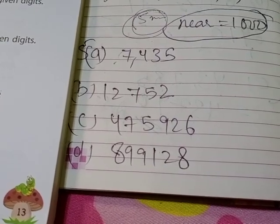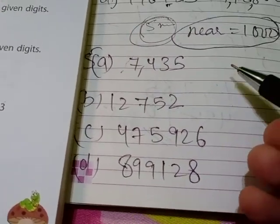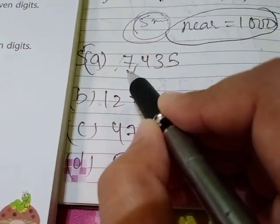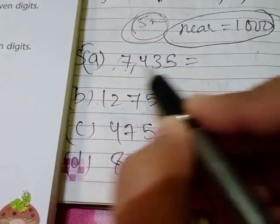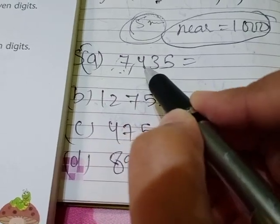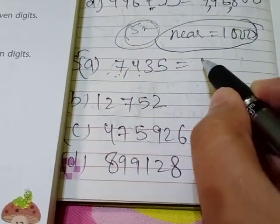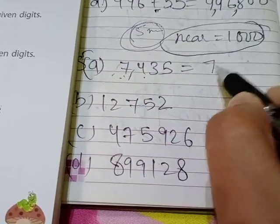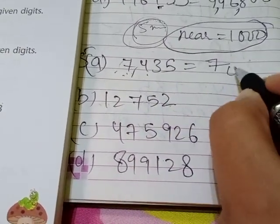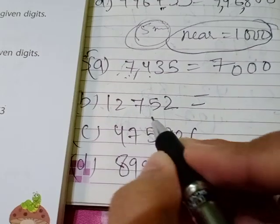For question 5A, the thousands place digit is 7. To change it, we see the digit to its right, which is 4. 4 is less than 5, so 7 is written as 7 only, and the remaining three digits become 0 0 0. The answer is 7000.